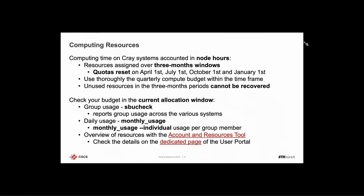You can also check day-by-day allocation usage with a script called 'monthly_usage', which has a '--individual' option to break down usage per group member per user. Additionally, there is an account and resources tool available on the CSCS user portal, accessible with your login credentials used to access ELA.